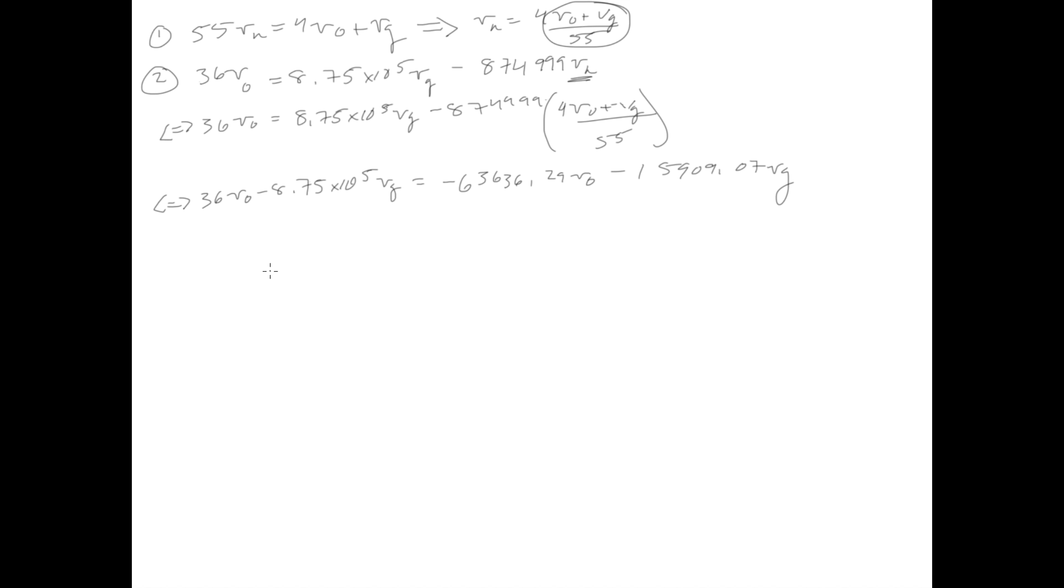So then if we were to add this 6363.29V0 to this 36, you would find that it would just be equal to 6372.29V0. And if we were to add this negative 8.75 times 10 to the 5th over to the right hand side, it would just be equal to 859090.93Vg. So now we actually have an equation that just contains V0 and Vg.